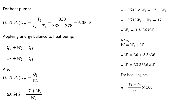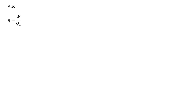For the heat engine, efficiency = (T3 − T2) / T3, the temperature difference divided by the maximum temperature. Substituting the values, the efficiency of the heat engine is 70.08%. Since efficiency = work output / heat input, Q1 = W / efficiency. Using W = 33.3636 kW, we get Q1 = 47.607 kilojoules per second, which is the rate of heat supply from the 840 degrees centigrade source.